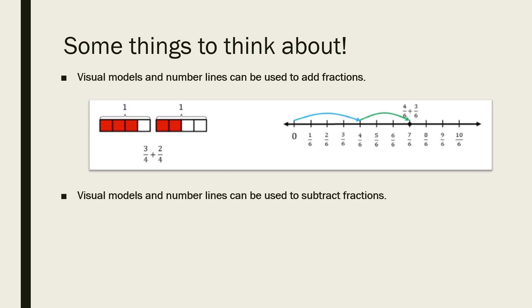When using a number line, it's important that we use the same interval all the way through. So this example shows us using sixths. If I had four sixths, I can go up to four. And then if I'm adding three sixths, from that four sixths, I can add three more.